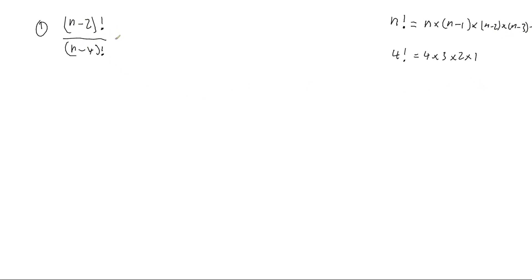If I look at this where I'm already starting at n-2, that means I'm going to start at n-2 and then multiply by the next number down, n-3, then n-4, and so on. If we do the same for our denominator, we're starting at n-4, then going one number down, then one number down, and so on.